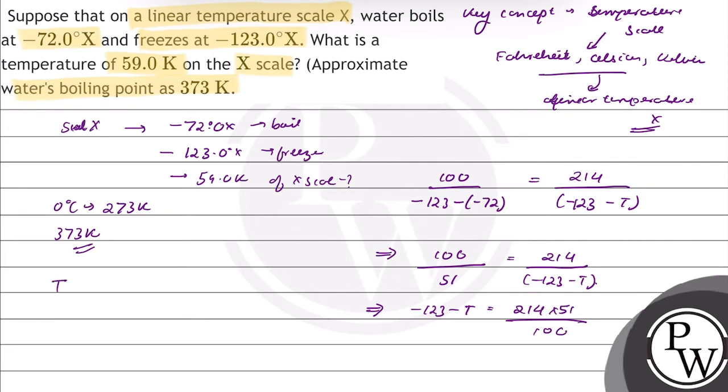So, temperature of 59 Kelvin on the X scale will be equal to -123 minus 214 into 51 upon 100. This will be equal to -232°X. X scale temperature of 59 Kelvin will be equal to -232°X.